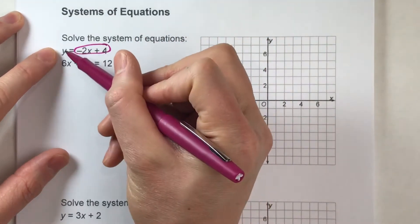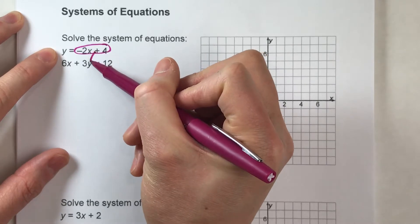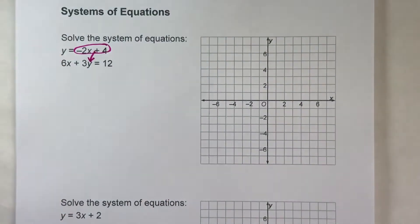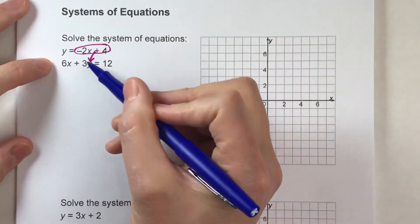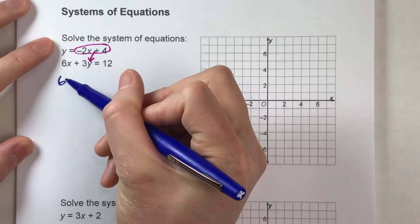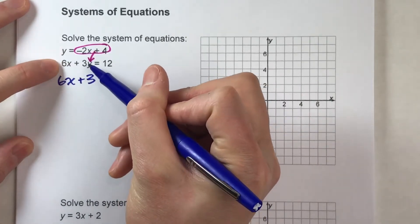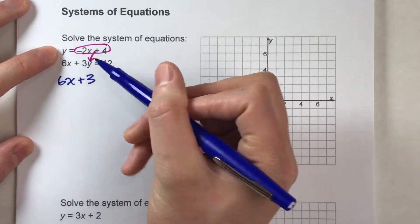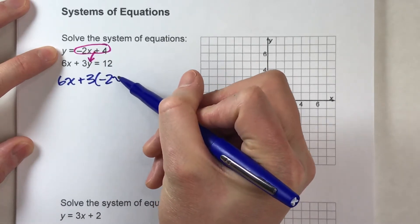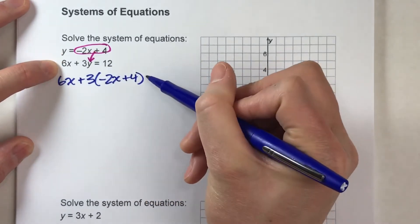So I'm going to substitute all this stuff in for y in the second equation. So my second equation becomes 6x plus 3 times, instead of y, 3 times all the things y is equal to, -2x + 4, and that's going to equal 12.